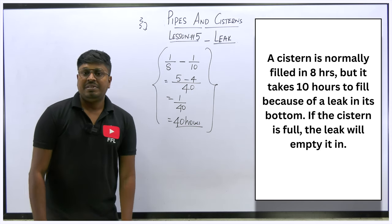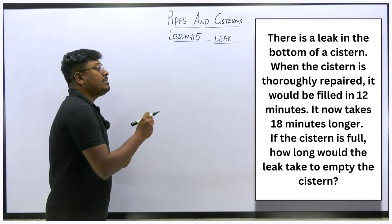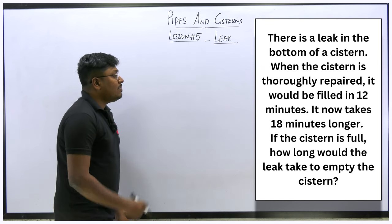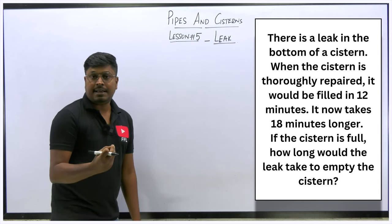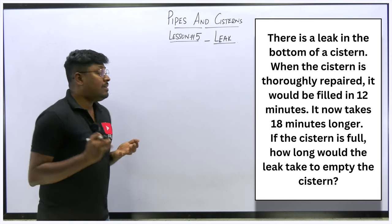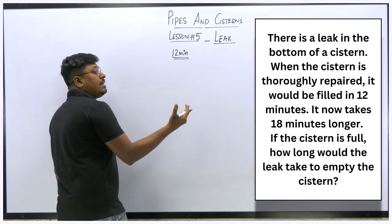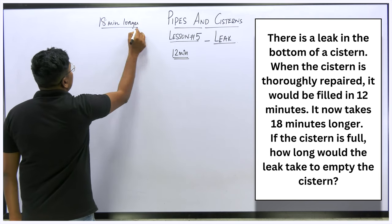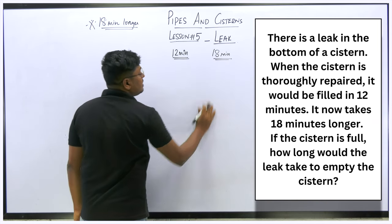Question number 2: There is a leak at the bottom of the cistern. When the cistern is thoroughly repaired, it would be filled in 12 minutes. It now takes 18 minutes longer. If the cistern is full, how long will the leak take to empty it? Now, without a leak the tank fills in 12 minutes. Because of the leak it takes 18 minutes longer. Many students mistakenly write this as 18 minutes total — that is wrong.